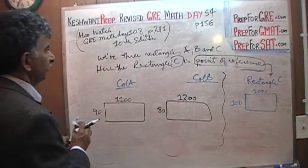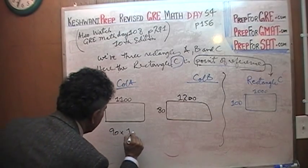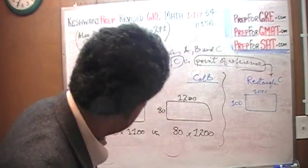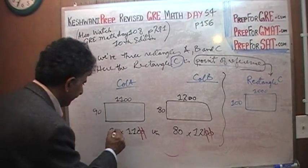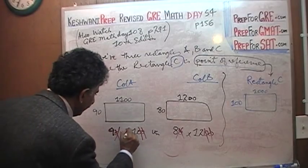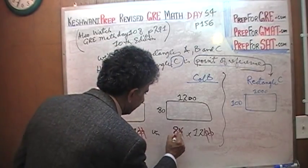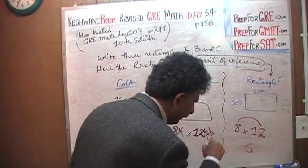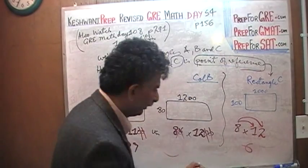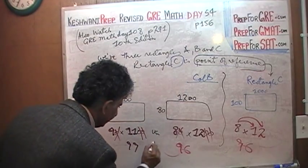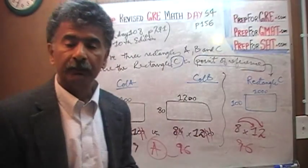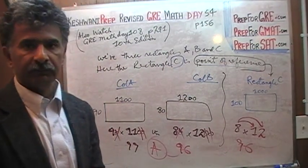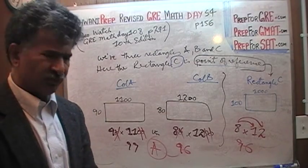And now we have to figure out the area just like we did before. 90 times 1100 versus 80 times 1200. Divide both columns by 100, knock out these two zeros. Divide both columns by 10, knock out one zero. 9 times 11 is 99 and 8 times 12, 8 times 2 is 16, carry 1, and then 8 times 1 is 8 plus 1 is 96. 96 versus 99, answer is A.